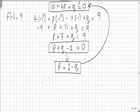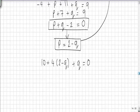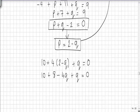Substituting, we get 10 plus 4 times (2 minus q) plus q equals 0. Solving, we get 10 plus 8 minus 4q plus q equals 0, which gives us 18 minus 3q equals 0. So 18 equals 3q, and q equals 6.